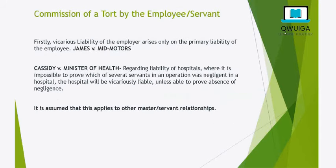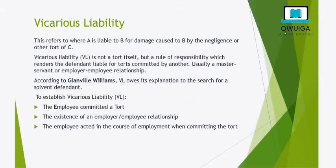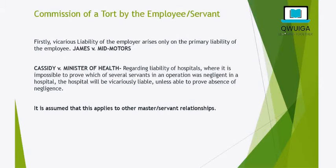For the first requirement — commission of a tort by the employee. Vicarious Liability in itself is not a tort; it is a rule of responsibility. So there must have been a tort. Vicarious Liability of the employer only arises on the primary liability of the employee, as was seen in James v Mead Motors. The employee himself must have committed a tort, causing some damage as a result of his negligence or some other tort. If the employee did not commit a tort, we cannot say that the Vicarious Liability of the employer has arisen.